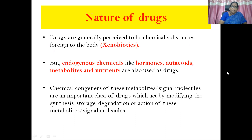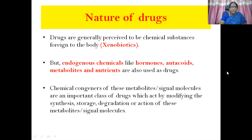But endogenous chemicals like hormones, autacoids, metabolites, and nutrients are also used as drugs — modification or modulation of endogenous chemicals. Chemical congeners of these metabolites or signal molecules are an important class of drugs which act by modifying the synthesis, storage, degradation, or action of these metabolites or signaling molecules.